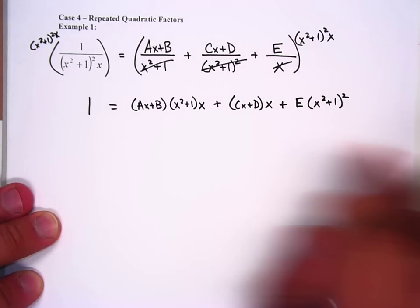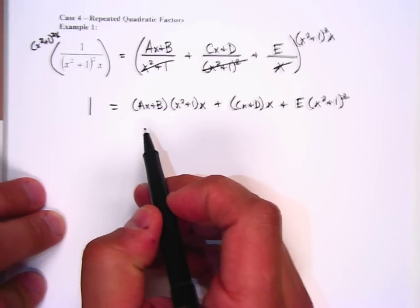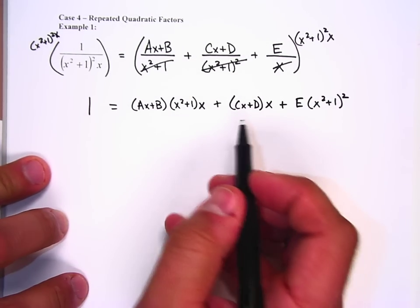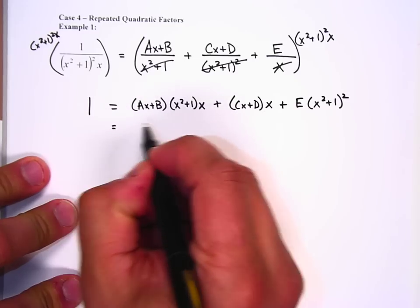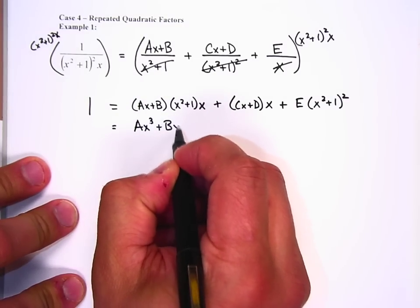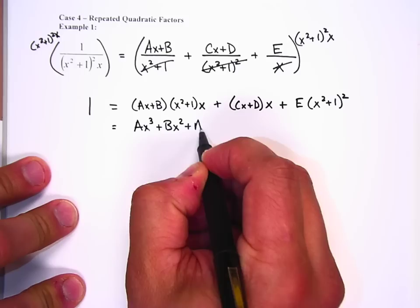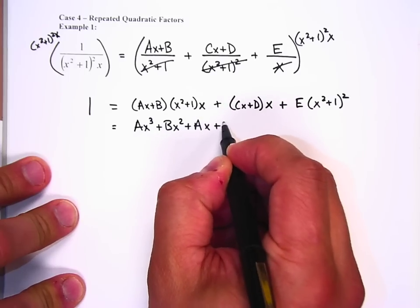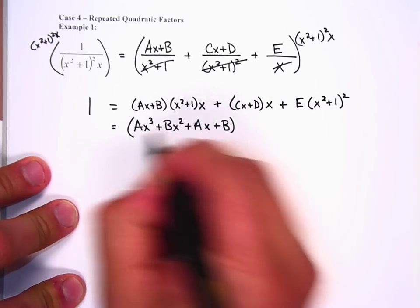So now we've got to simplify this. My suggestion, foil then distribute. Foil then distribute. So if I foil this, I get ax cubed plus bx squared plus ax plus b. That's all times x.